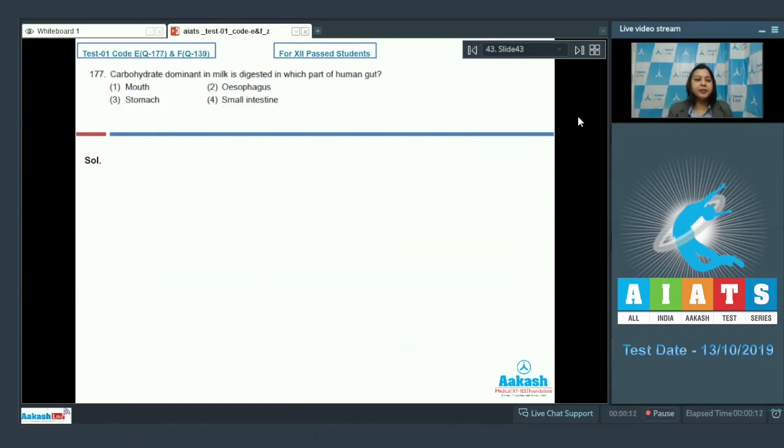Question number 177. Carbohydrate dominant in milk is digested in which part of human gut? Carbohydrate which is dominant in milk is lactose. Lactose which is also called as the milk sugar.